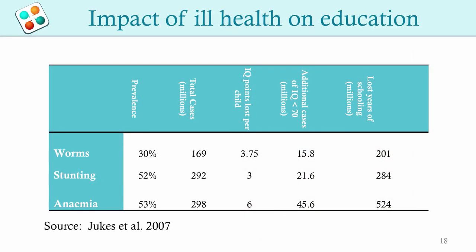This graph illustrates the impact of ill health on education outcomes. Significant percentages of students suffer from worms, stunting, and anemia. Three to six IQ points may be lost as a consequence. Each case results in one or two years of lost schooling, and worldwide the lost schooling years amount to millions.